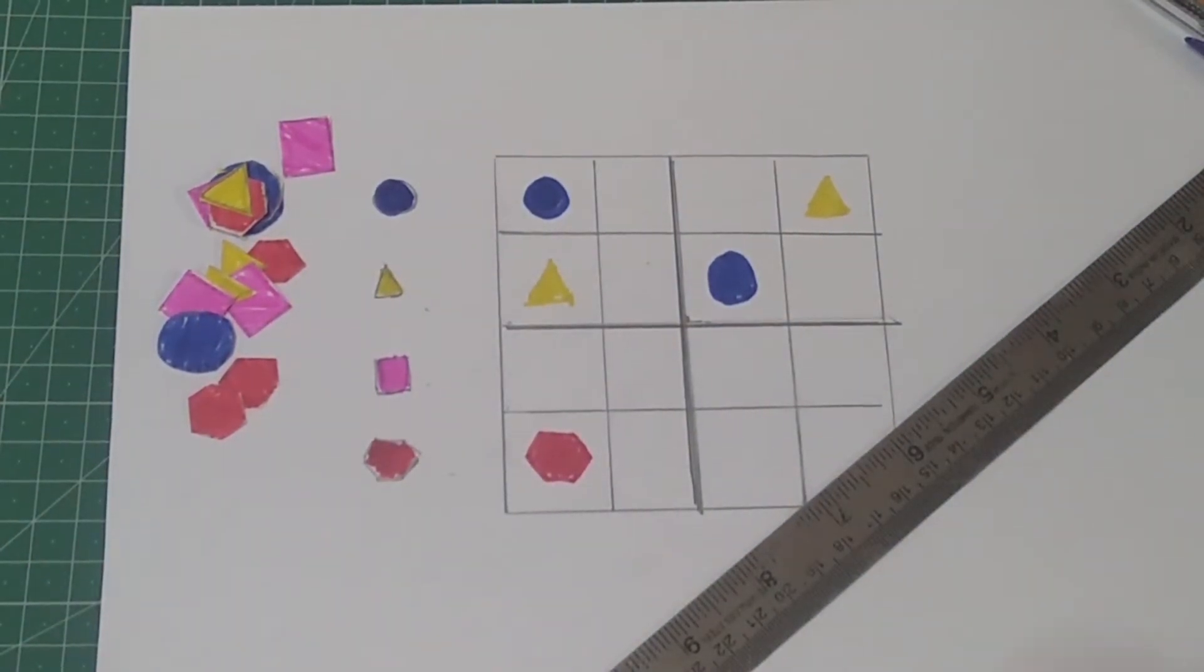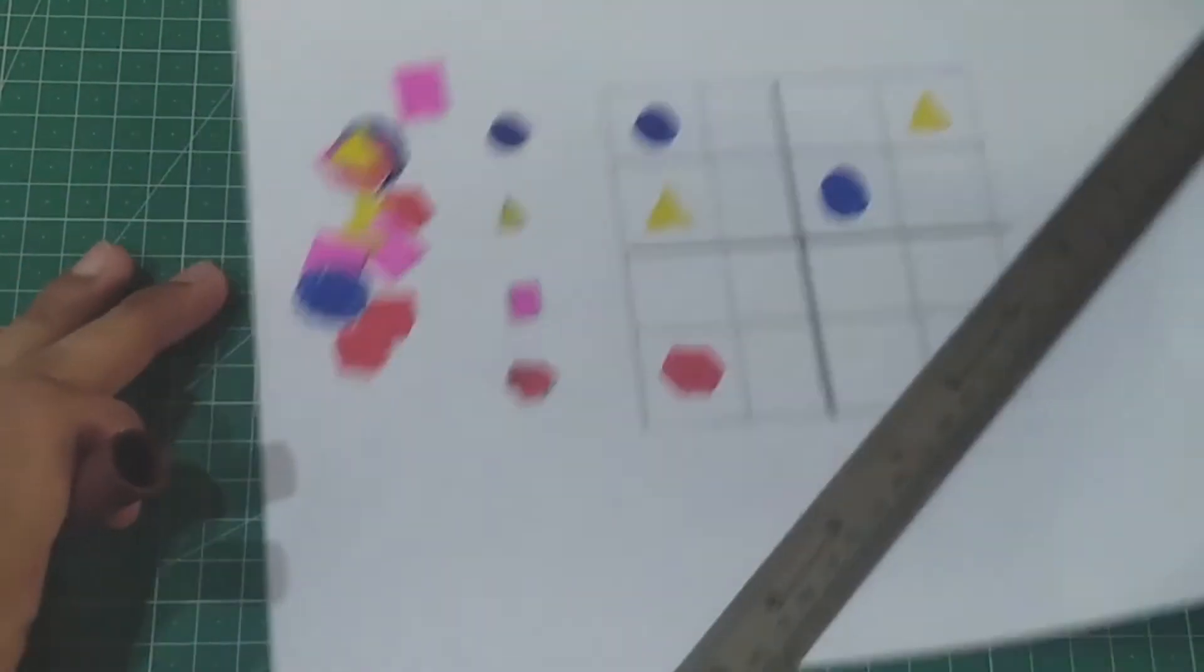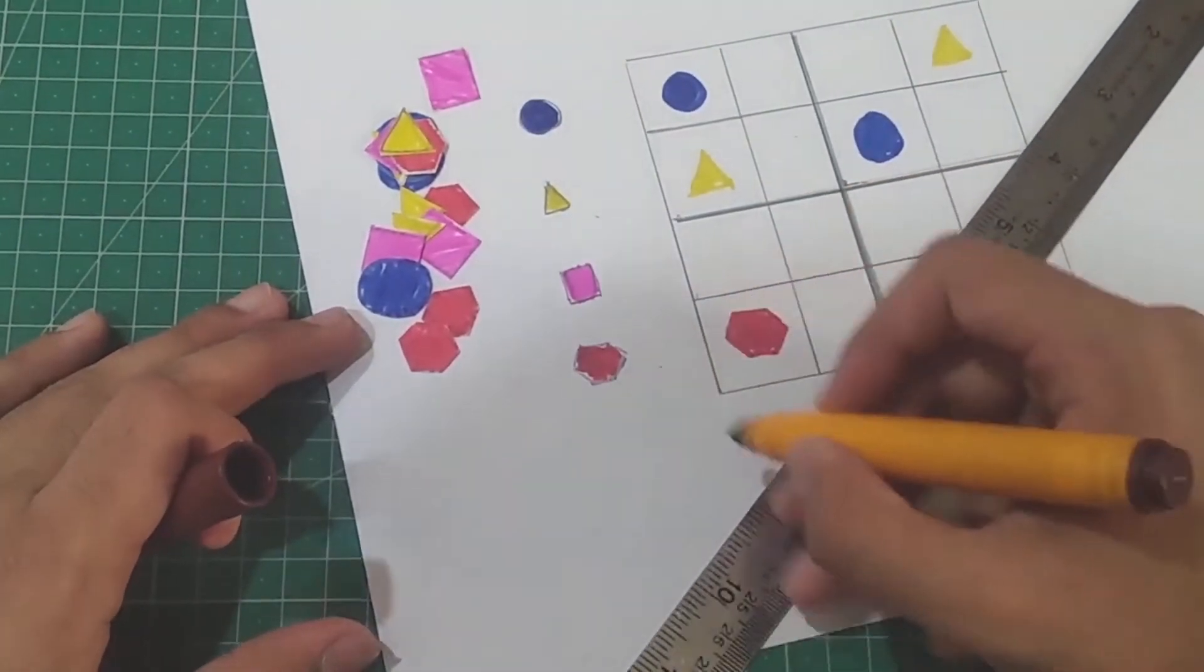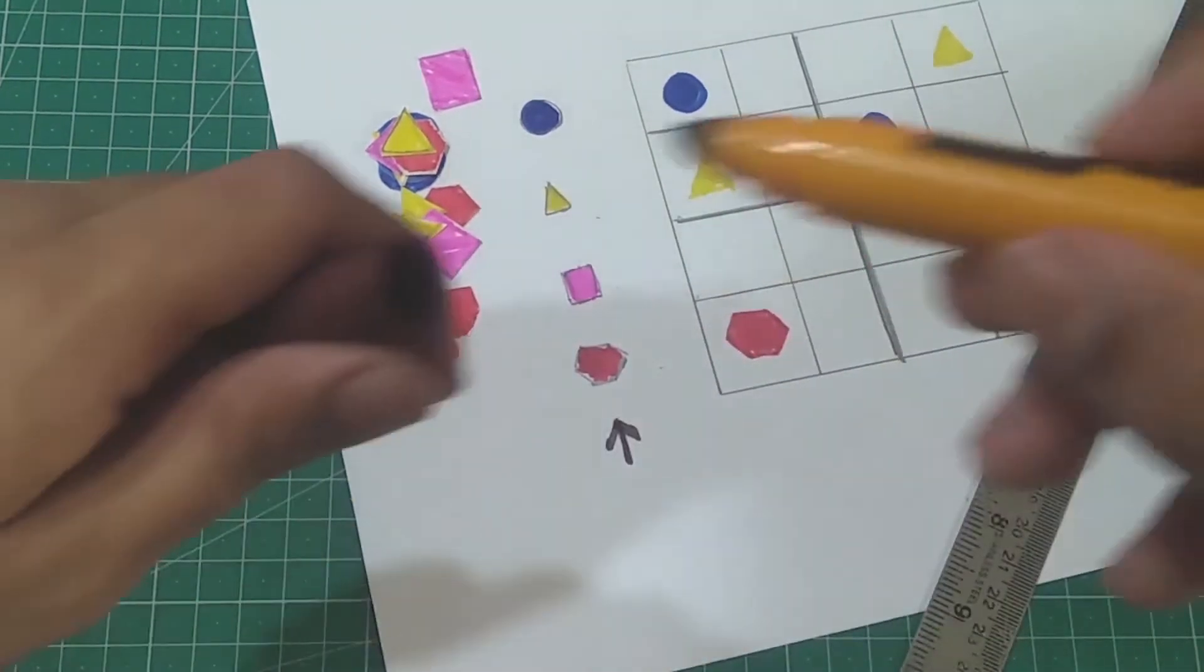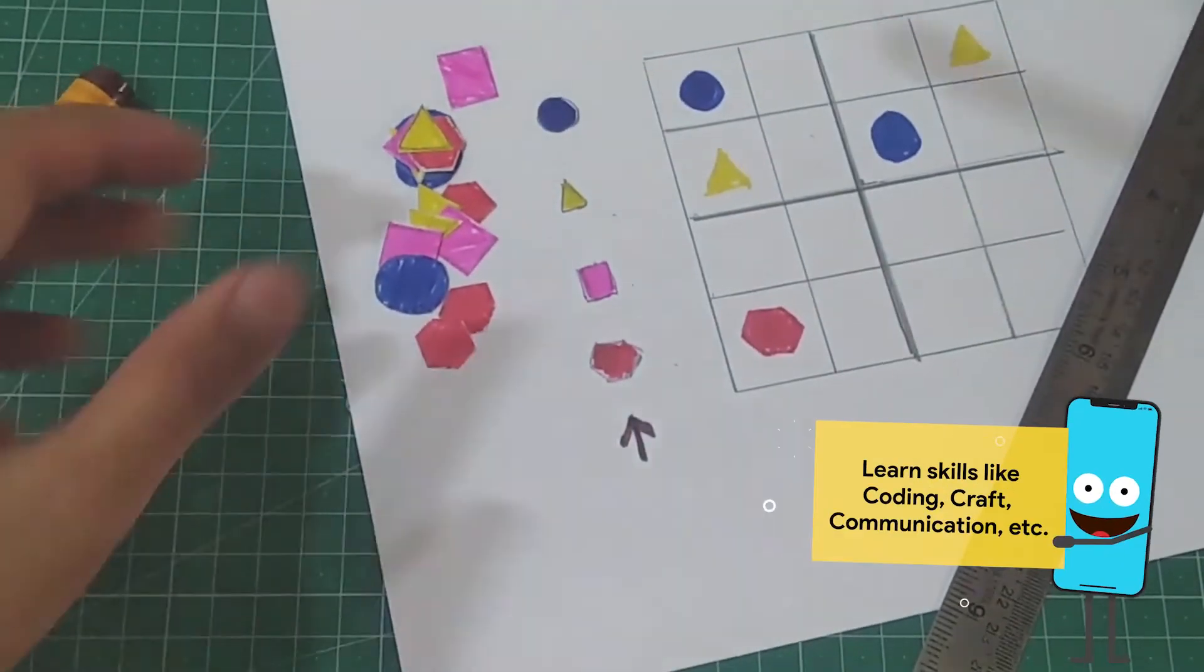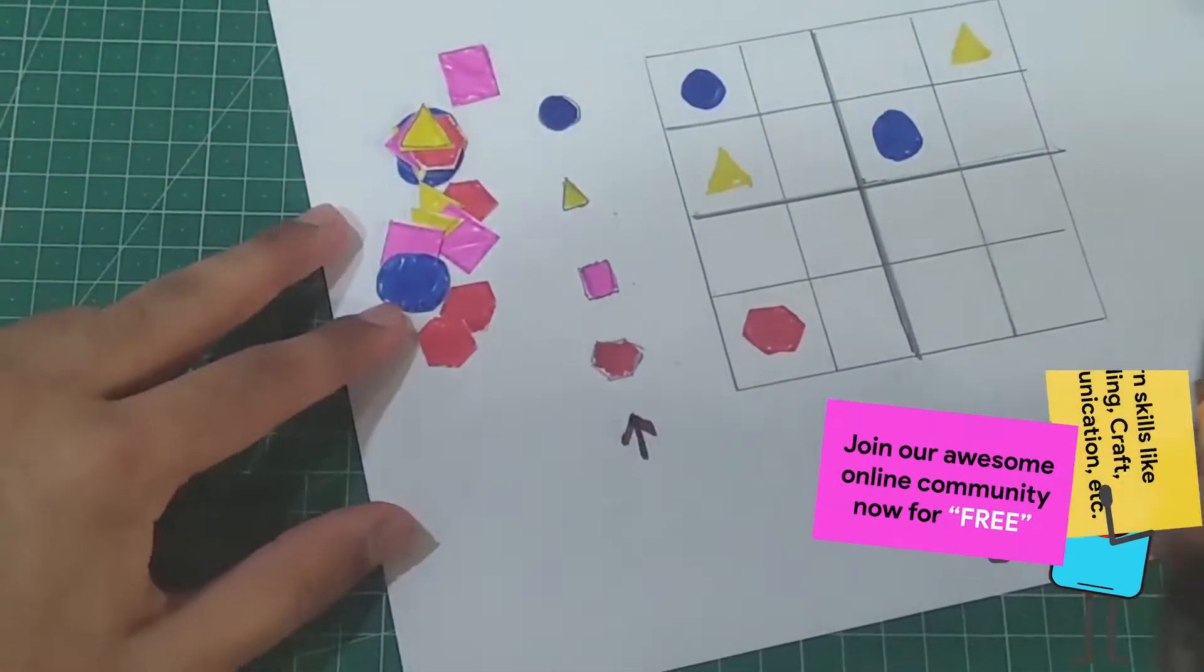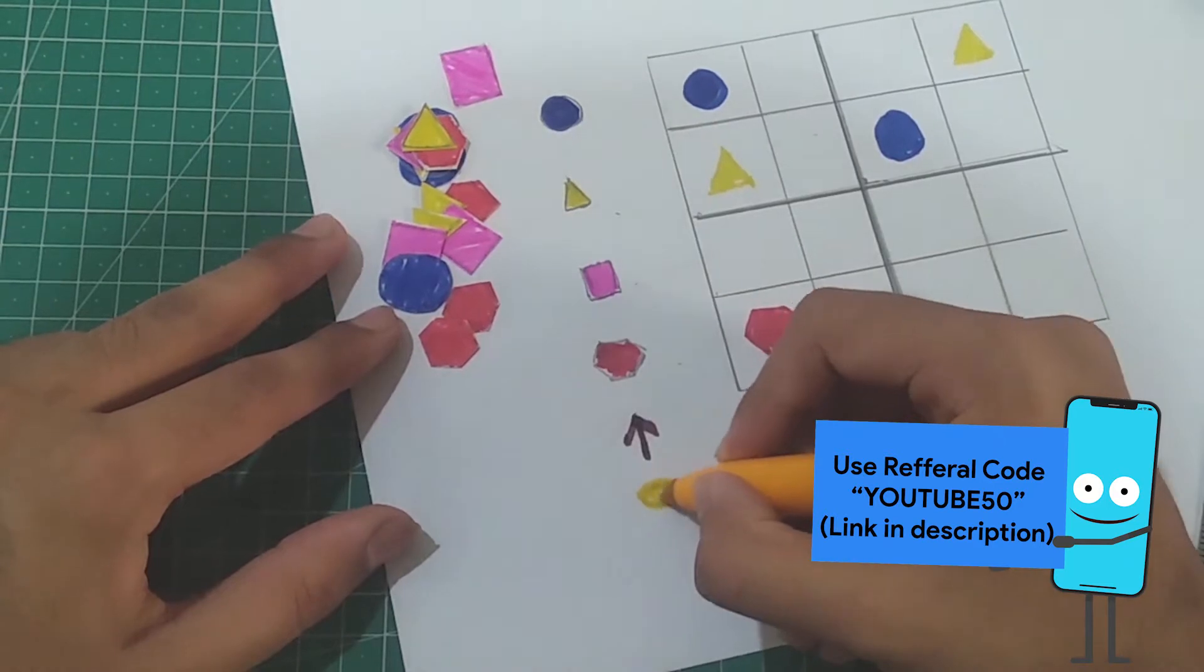And one more thing that you can do is there is one more puzzle down there, a Sudoku shape puzzle in which I have added two more shapes. That is an arrow and an oval.